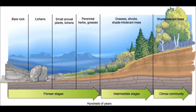Once they start to decay, it moves into the intermediate stage, where grasses and shrubs start to grow. Finally, it moves into the climax community, where the biggest and tallest trees can now grow.